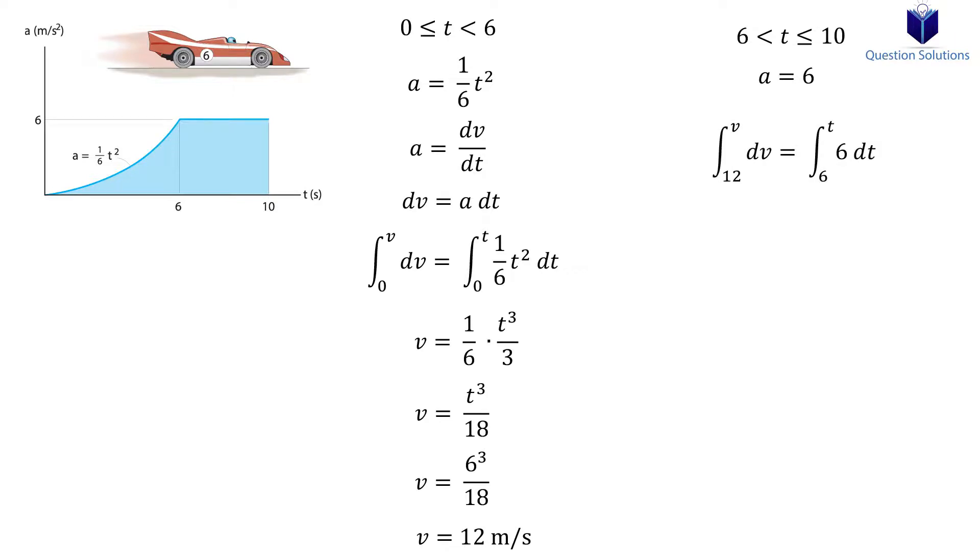Let's write down our integral. Remember that our lower bounds are 12 meters per second and 6 seconds. When we solve it, we get our velocity equation for the next segment.